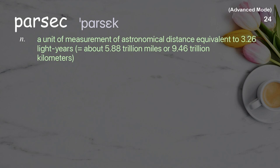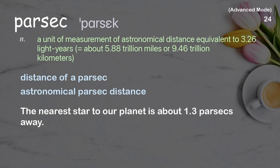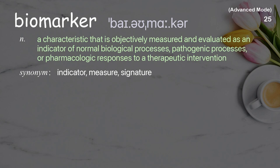Parsec: A unit of measurement of astronomical distance equivalent to 3.26 light years, about 5.88 trillion miles or 9.46 trillion kilometers. The nearest star to our planet is about 1.3 parsecs away.